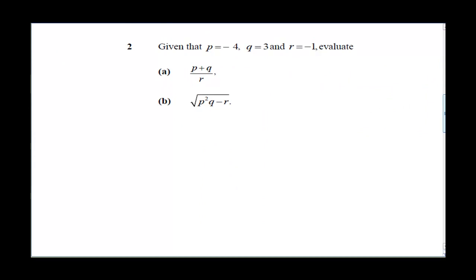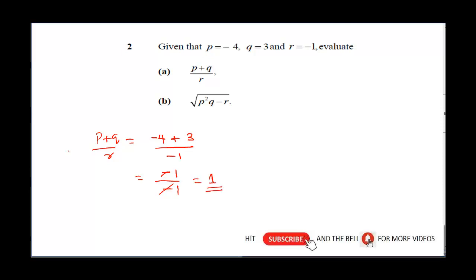The next question says: given that p = -4, q = 3, and r = -1, evaluate (p + q)/r. Now this is going to give us (-4 + 3)/(-1), which gives us -1 over -1. The minus is going to cancel, -1 divided by 1 will give us 1. So this is our answer for option a.